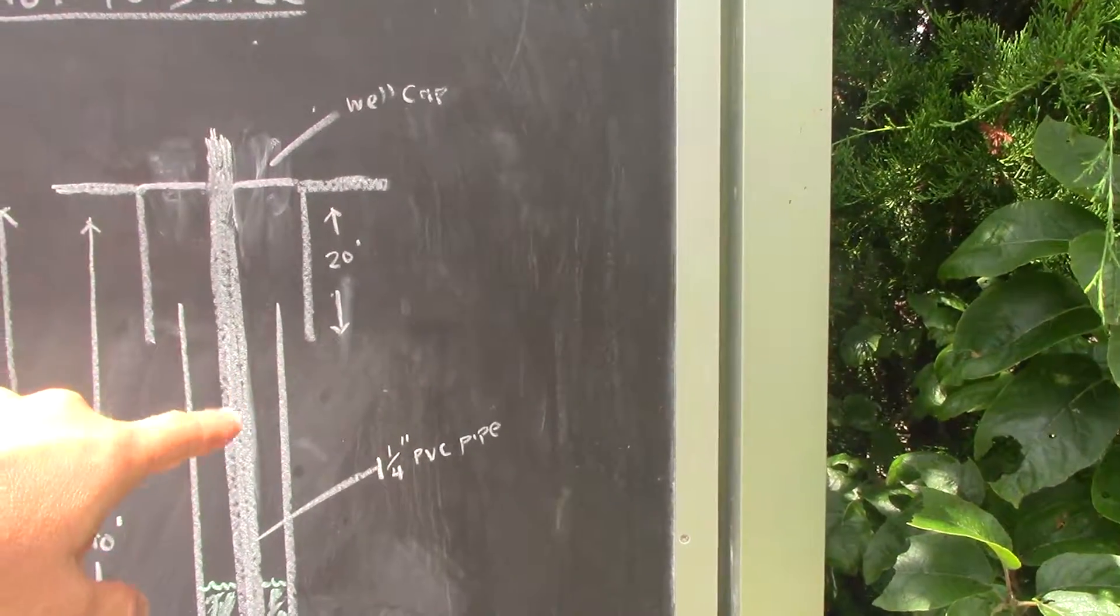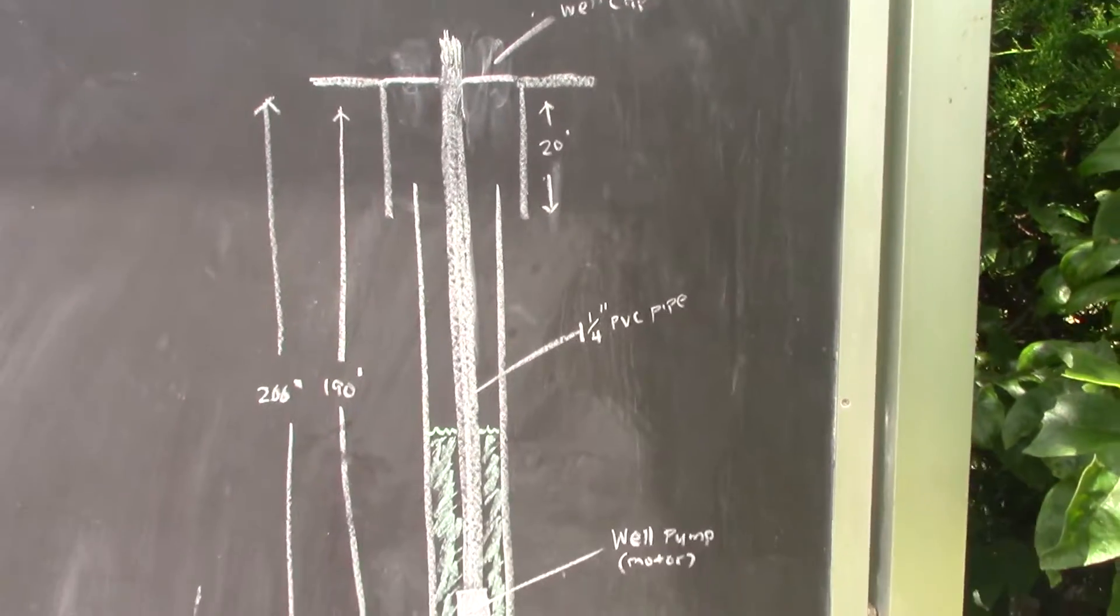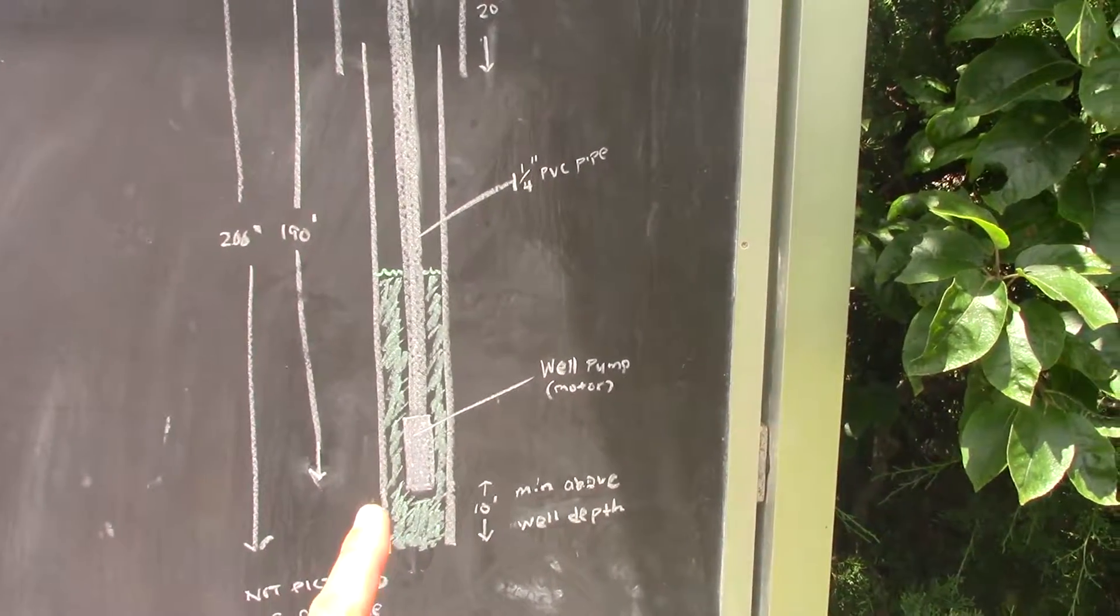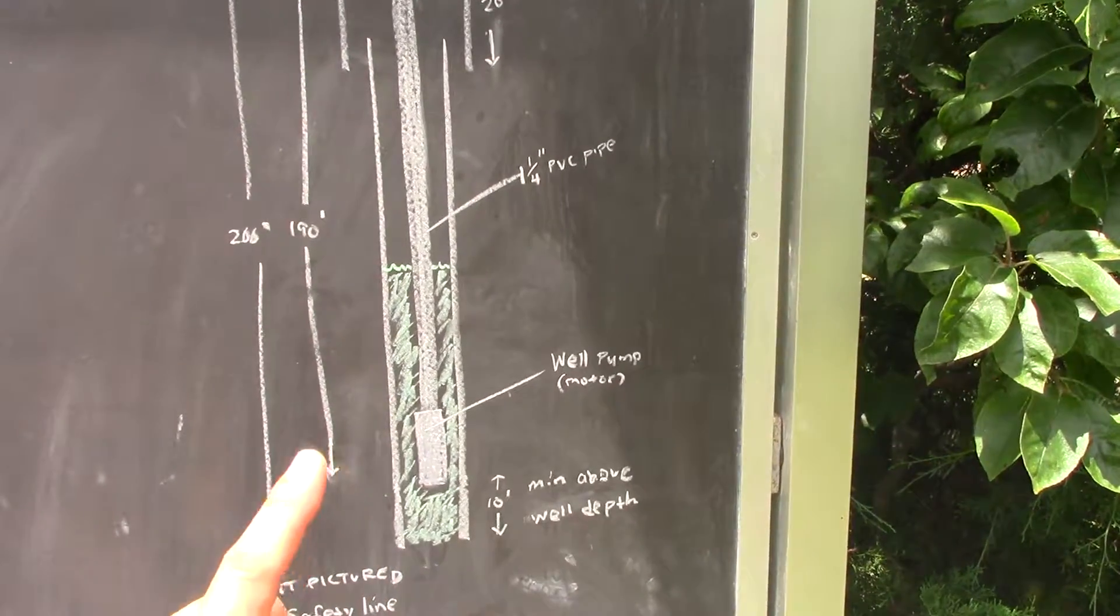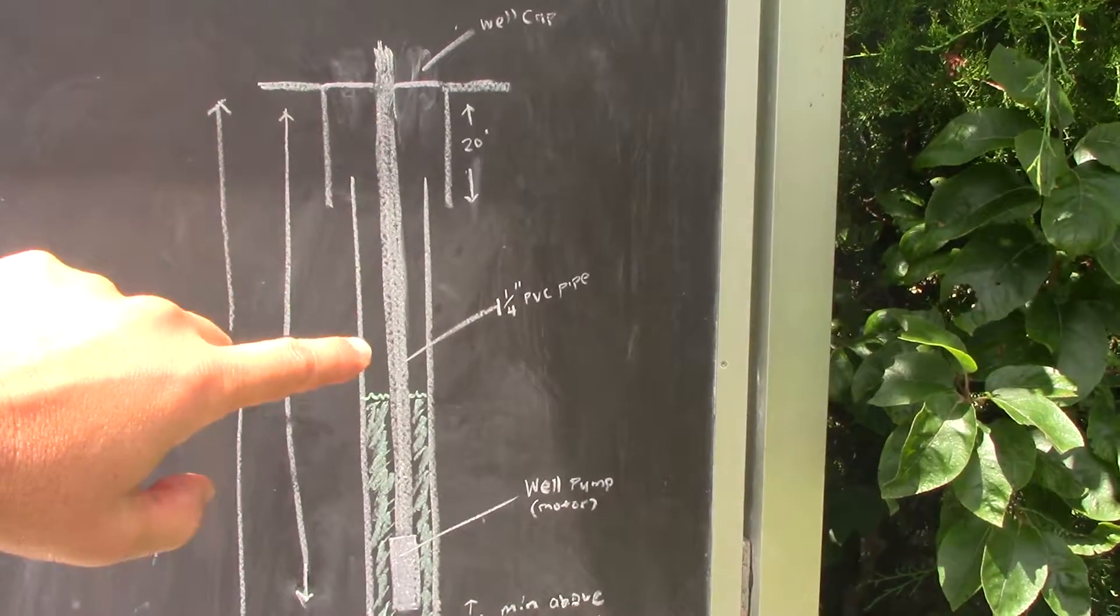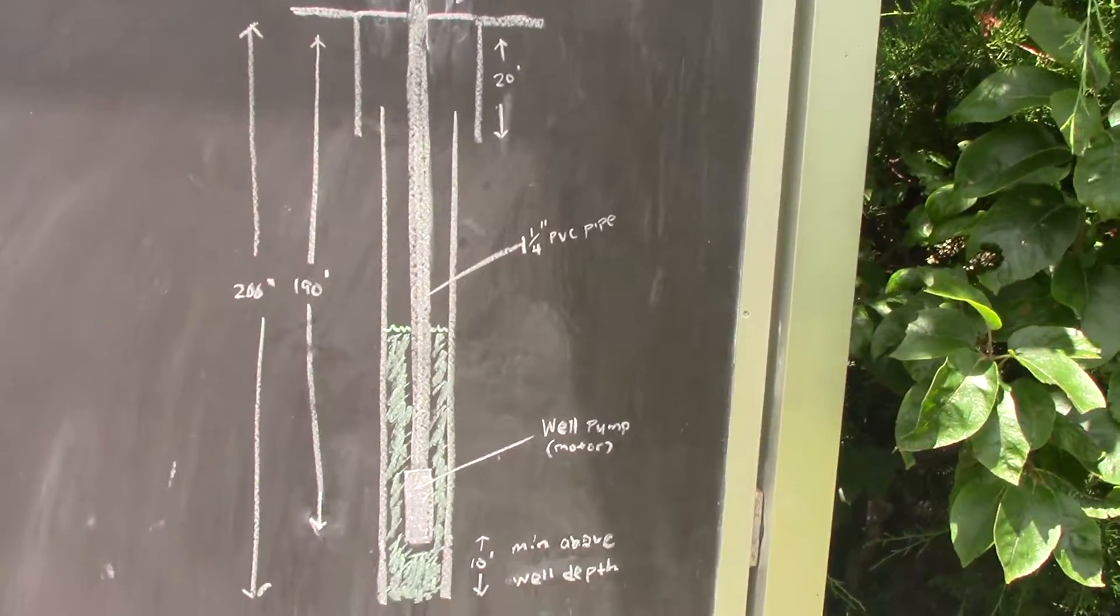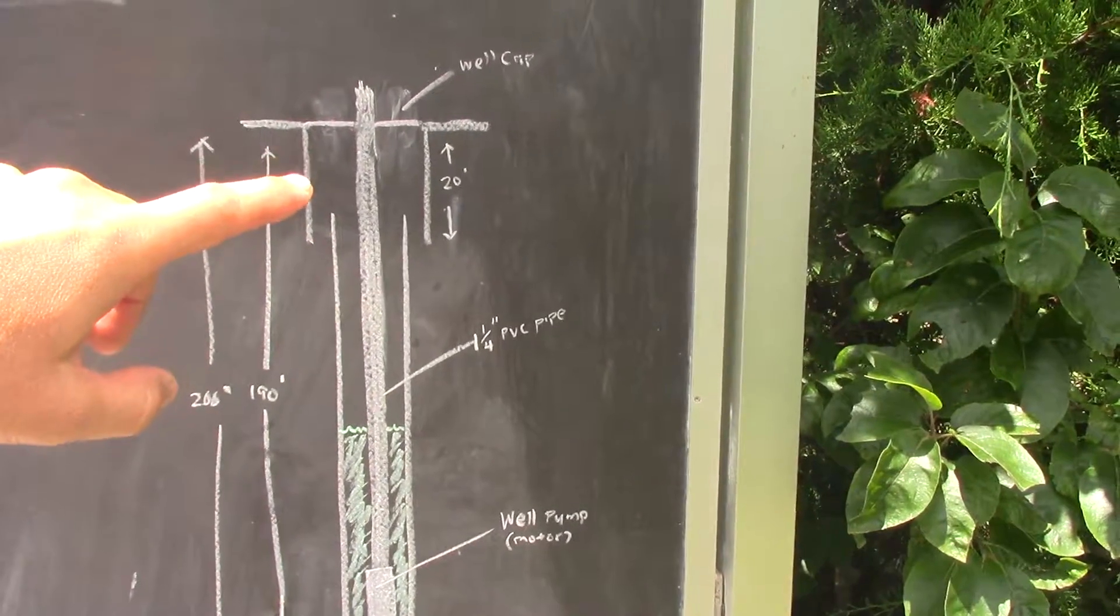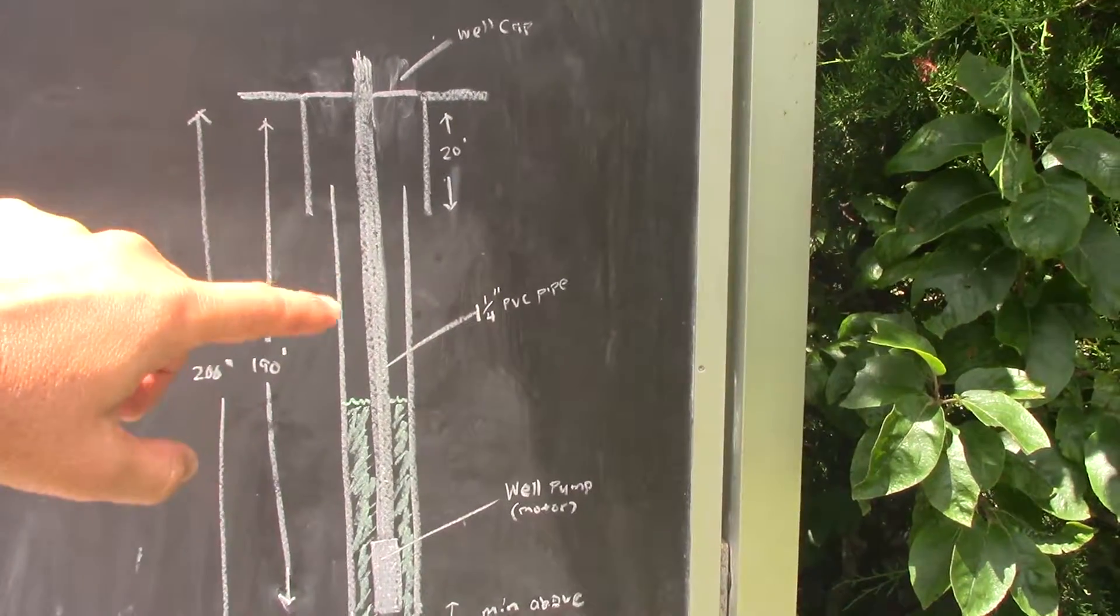The torque arrester is a nice thing to have on your well pump because the motor, as it turns, will create some degree of torque. You don't want the whole shaft spinning or any wire to get tangled up in here, so put the torque arrester somewhere in here above your water line.